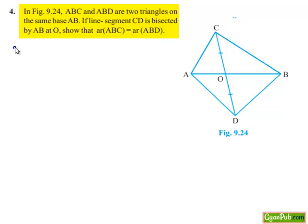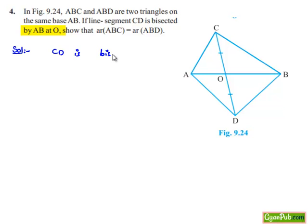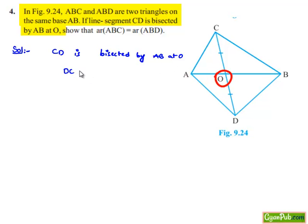Now, moving on to the solution. It is given that CD is bisected by AB at O. Therefore, we can say that OC is equal to OD.